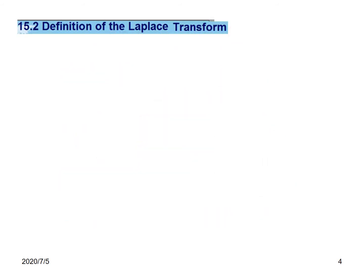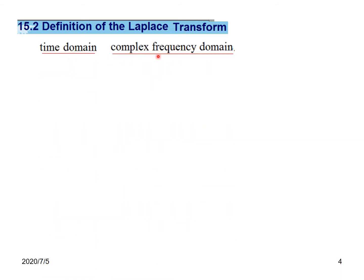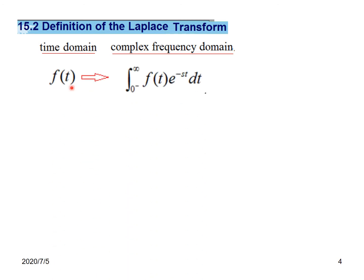Now let us see the definitions. We have the time domain and the complex frequency domain. If a function is F(t), we can transform it into the complex frequency domain. We call this the Laplace transform, computed by multiplying the signal by e raised to the power minus st and then integrating from 0 to infinity. This is the Laplace transform technique.